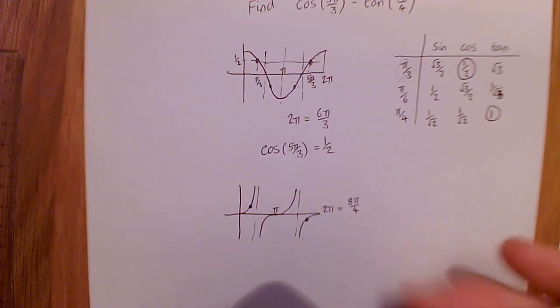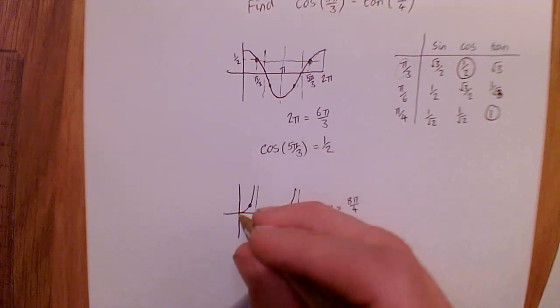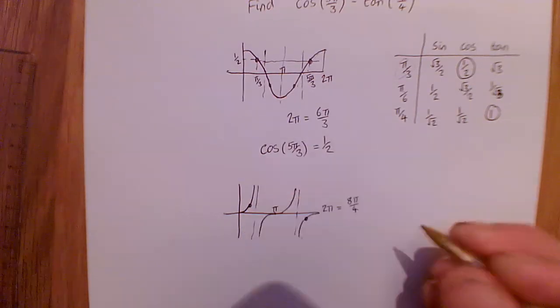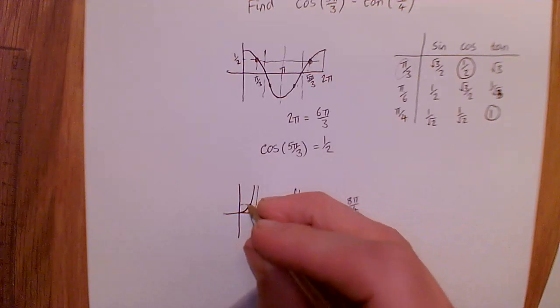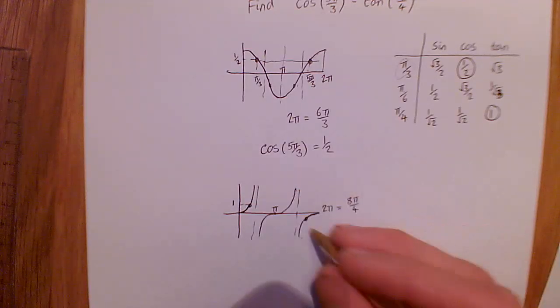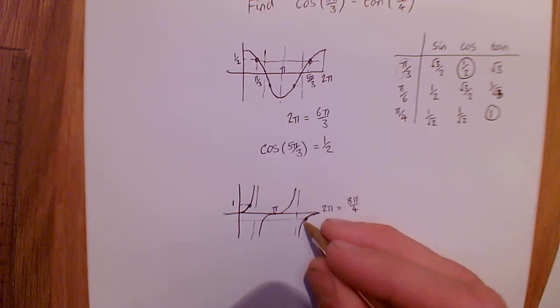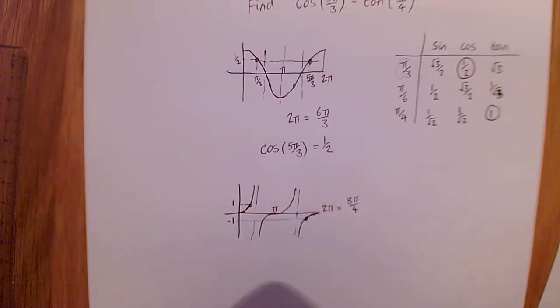Now, hopefully we can see that following up this section of the graph here is the same as coming down this section of the graph here. So if this has a height of 1, then this point here has come down by the same amount, so it's a height of minus 1.